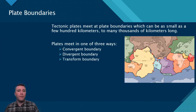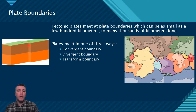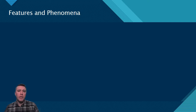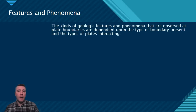Lastly, a transform boundary is one in which two plates are sliding past one another laterally. A prime and famous example of this is between a region of the Pacific Plate and the North American Plate. What kinds of geologic features and processes are found at a plate boundary depend upon two main factors: the type of boundary and the type of plate, either oceanic or continental.